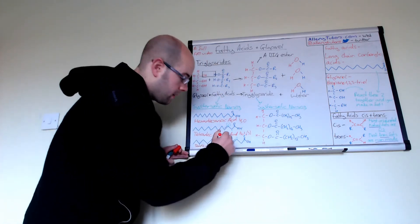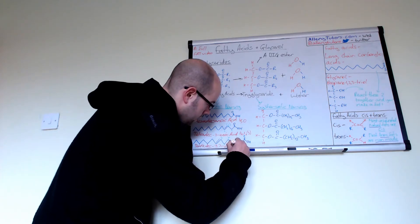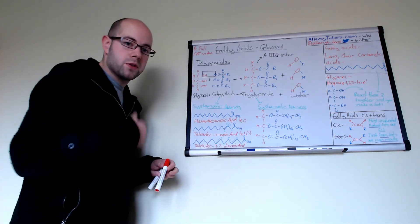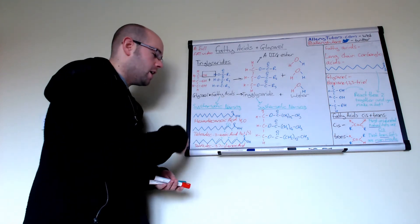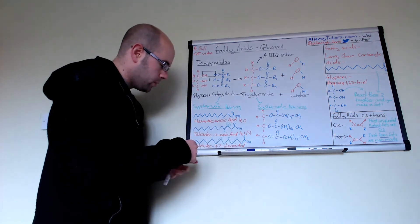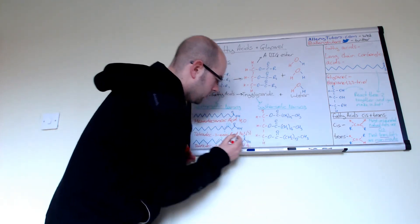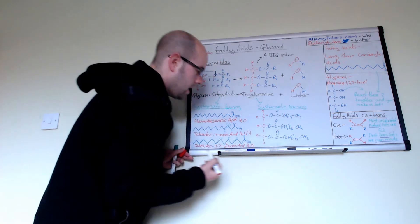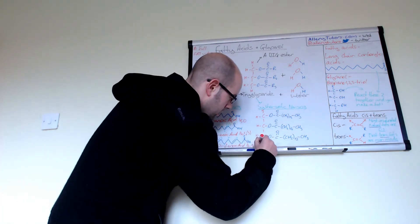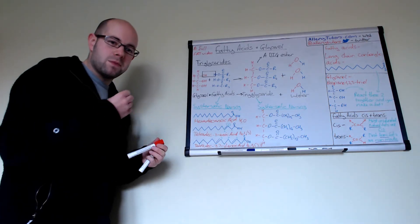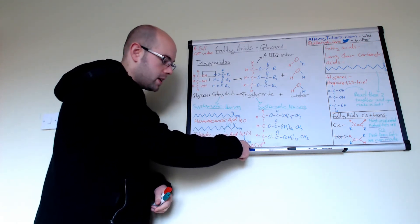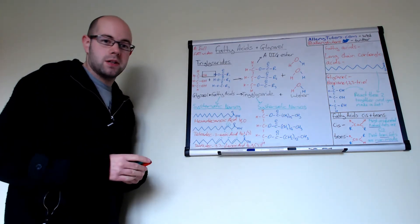So this is tetradec-3,7-dienoic acid — and that 'di' is very important. If you had three double bonds it would be trienoic, if four it would be tetraenoic. For the numbering at the end: 14 carbons, 2 double bonds, on the 3rd and 7th carbon — written as 14:2(3,7). It seems really long but it's a logical process: it shows exactly how many carbons you've got, how many double bonds, and where those double bonds sit.